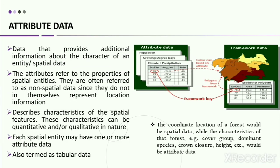The second type of data is attribute data. Attributes are the non-spatial data associated with point, line, and area entities. You can also term the attribute data as the thematic characteristic of a spatial data. Attributes are the characteristics of an entity.